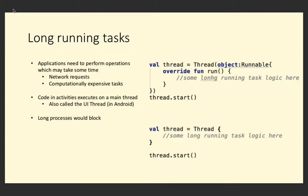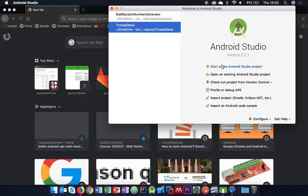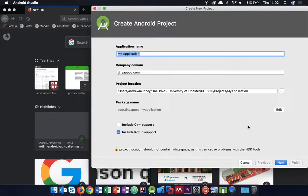If we do a long-running task and just write the code for it in our main activity without doing anything particular, our activity could freeze up. I can show you a brief example of that - I can write some badly written code and we'll see what happens. So let's jump into Android Studio and create a new empty application.